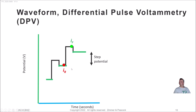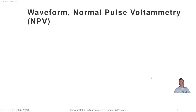In differential pulse voltammetry there's an I_f recorded and an I_r recorded, both in approximately the last 25% of the step — that's the timing strategy. The delta I in DPV is: ΔI = I_f − I_r, coming from a similar place as in square wave voltammetry. So DPV is using both timing and subtraction of the non-Faradaic current, very similar to square wave voltammetry.